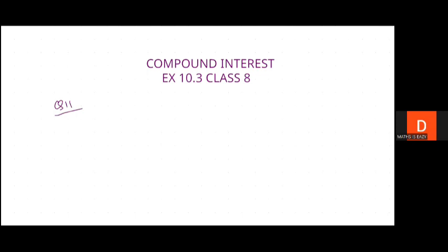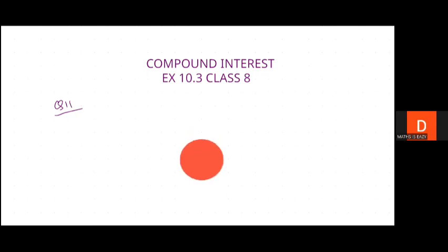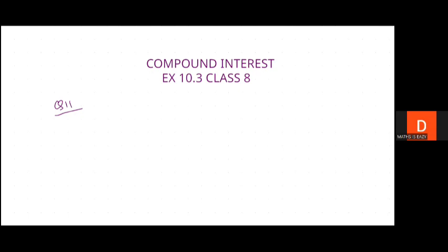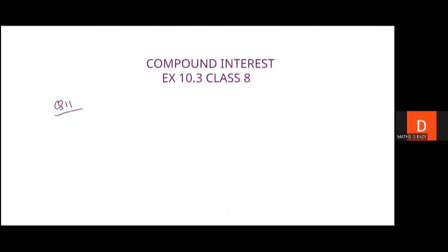If you guys want to see the solution of earlier chapters of class 8, you can go to the playlist or the description box of this video where all the solution videos are available. The chapters I have solved so far are: rational numbers, exponents, square roots, cube and cube roots, playing with numbers, algebraic expressions, factorization of algebraic expressions, linear equations in one variable, percentage and its applications, compound interest, direct and inverse variation, quadrilateral, probability, surface area and volume. For class 7: integers, fractions, decimals, rational numbers, linear equations, lines and angles, triangles and its properties. All playlists are linked in the description box.